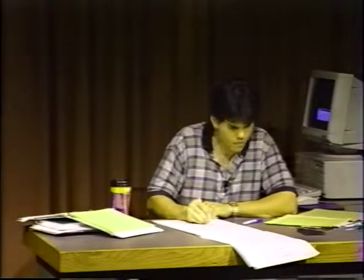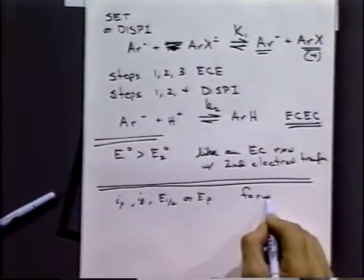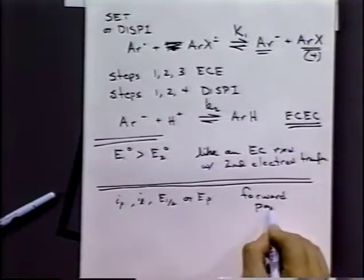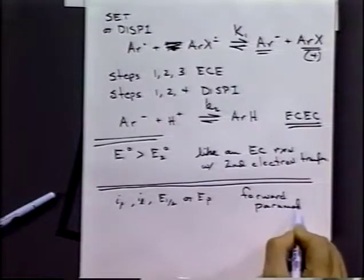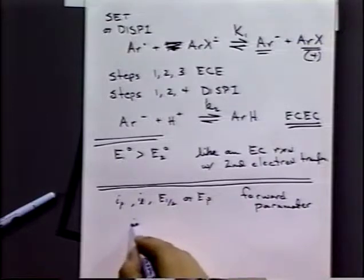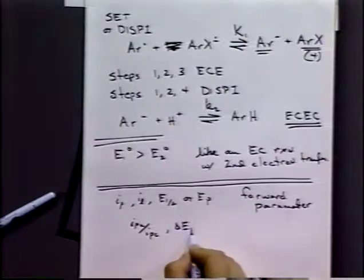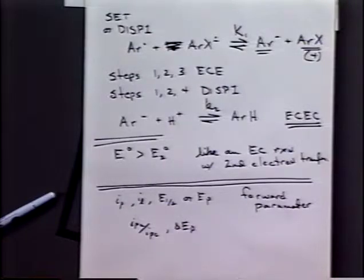The observable parameters that we can see in a cyclic voltammogram are things like the peak current, the limiting current if we have something like that, the half wave potential, or the e-peak. These will all be forward parameters because they're occurring on the initial wave, the first wave out. And we can have reverse parameters such as IPA or IPC. Delta e-peak would be another example of the reverse parameters.